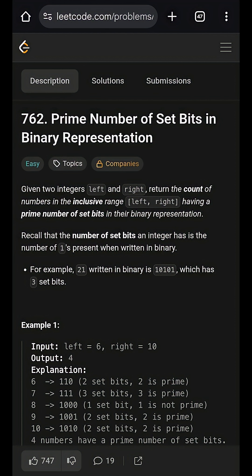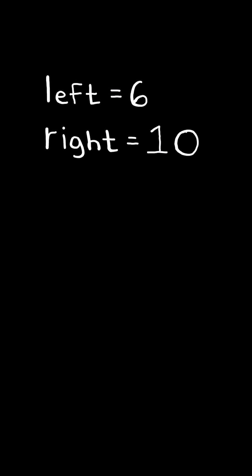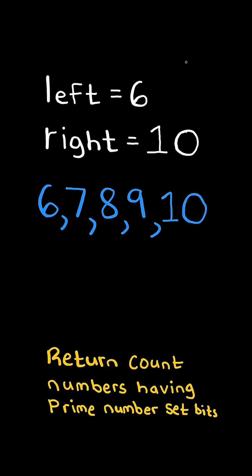Prime number of set bits in binary representation. Given two integers left and right, consider the inclusive range between left and right. Return the count of numbers having a prime number of set bits.